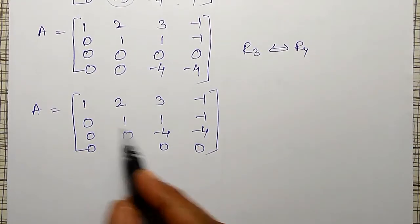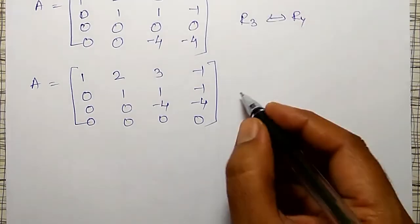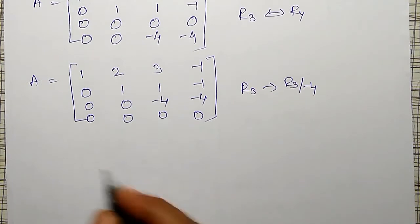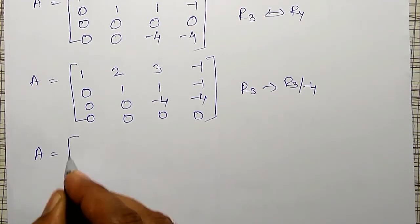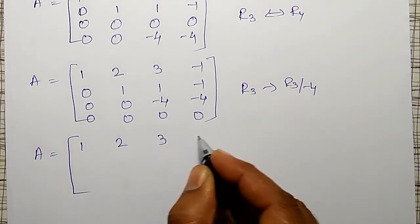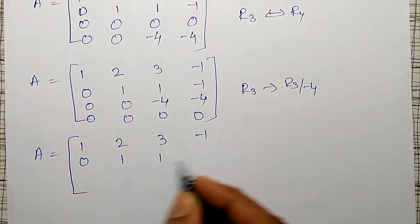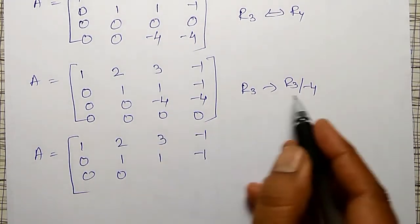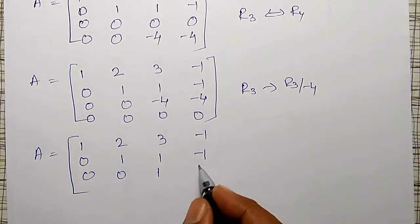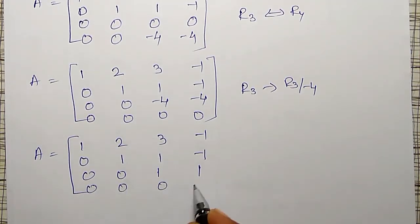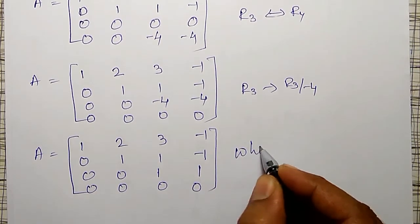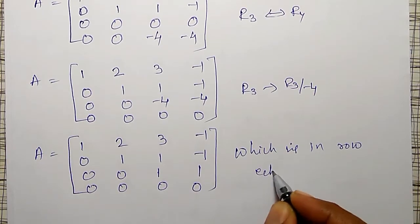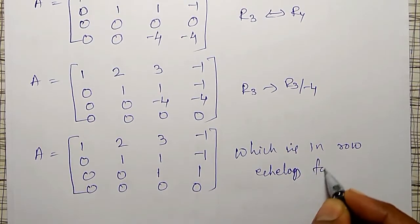The non-zero row's leading element must be 1. To make this 1, R3 is replaced by R3 divided by −4. The matrix becomes: 1, 2, 3, −1; 0, 1, 1, −1; 0, 0, 1, 1; 0, 0, 0, 0 — which is in row echelon form.